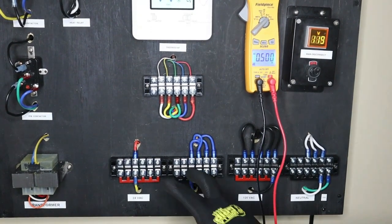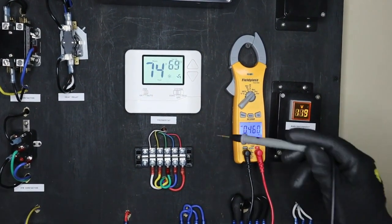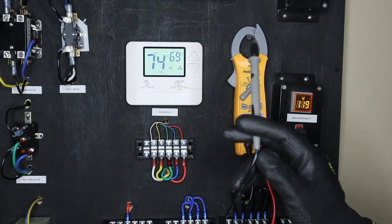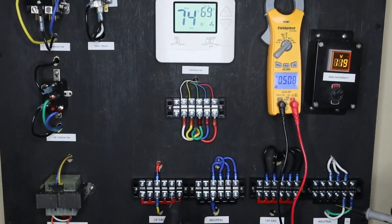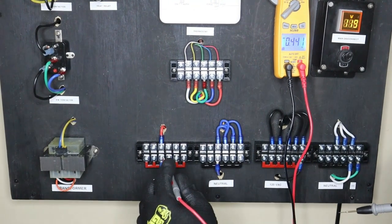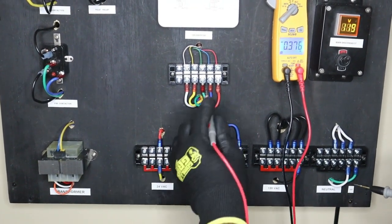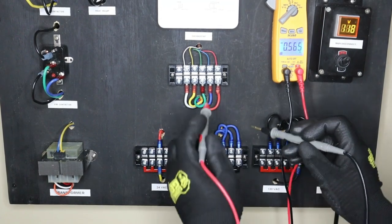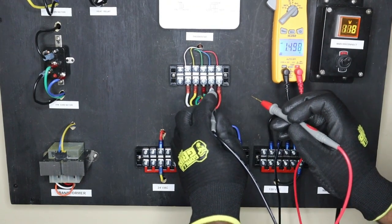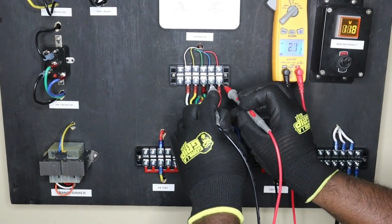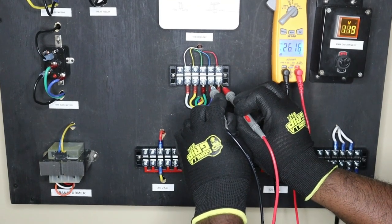Now this low voltage AC then feeds to my thermostat which then distributes the low voltage power to all my contactors and relays in my system. So as you can see my 24 volts comes into this terminal block. My red is my 24 volts, my blue is my neutral, and I should measure my terminal block leading to my thermostat. I'm measuring 26 volts.